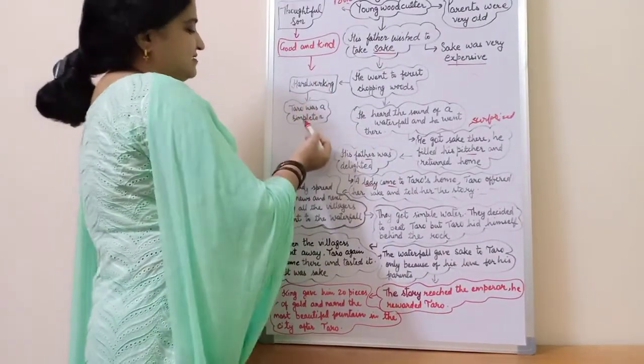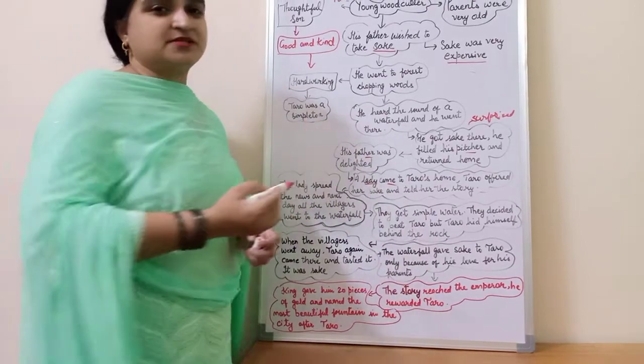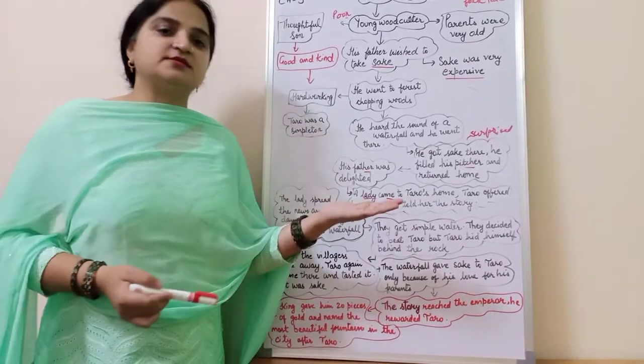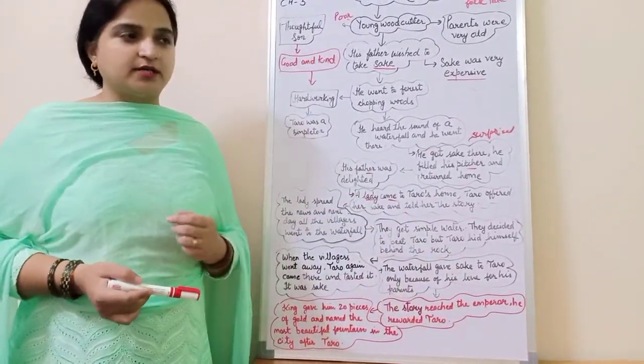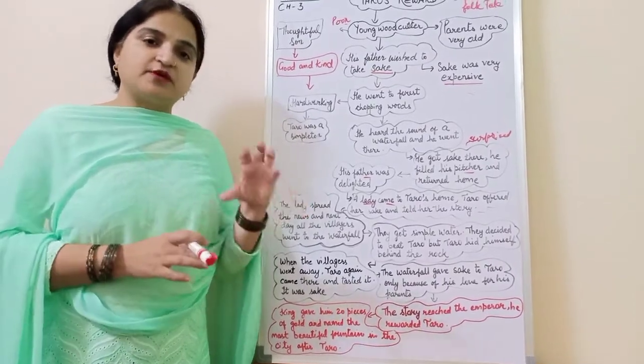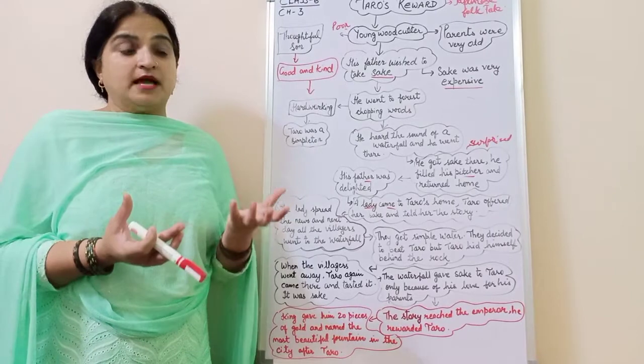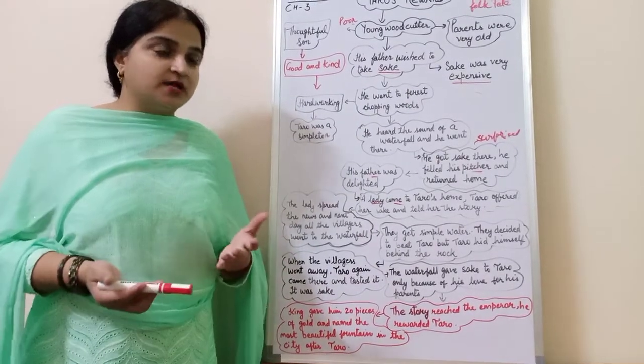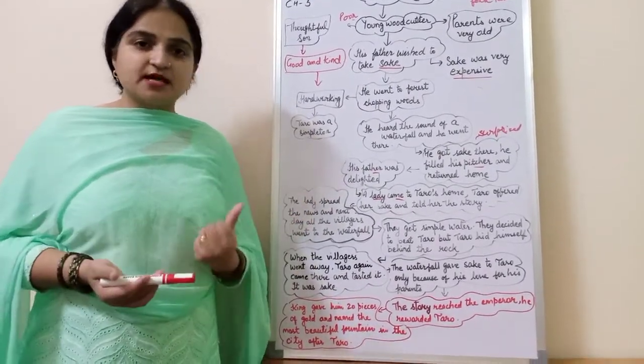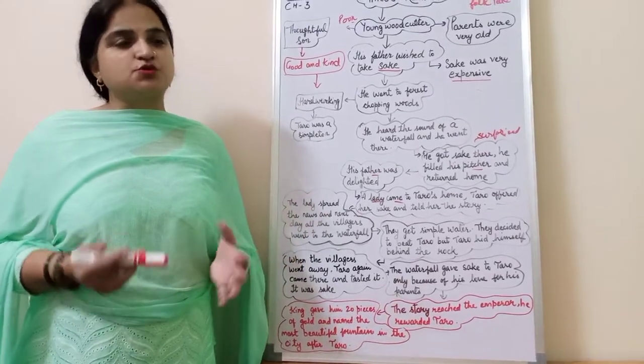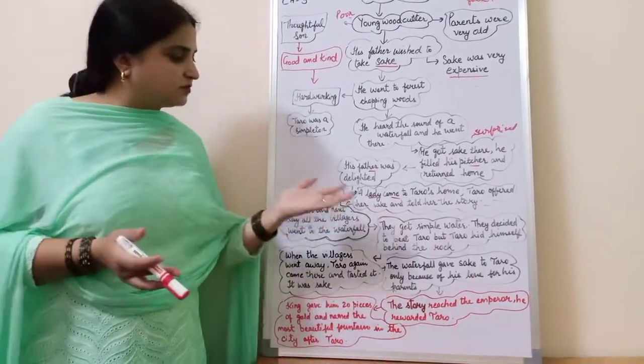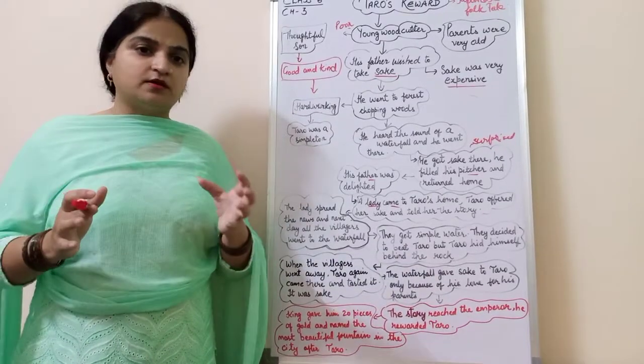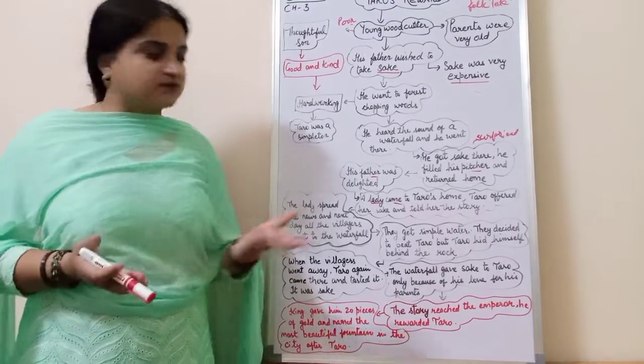And Taro was a very simple man. Here you come to know that he was very simple. He was hard working. He was very simple. What he did? He offered this sake to that lady also. And lady was very much surprised that this family is very poor and how come they have this sake, so expensive drink? And then she asked him that how did he manage to get sake? And Taro was a very simple person. So he told the whole story to that woman that in this forest he had seen a waterfall and there he got this sake from that waterfall.